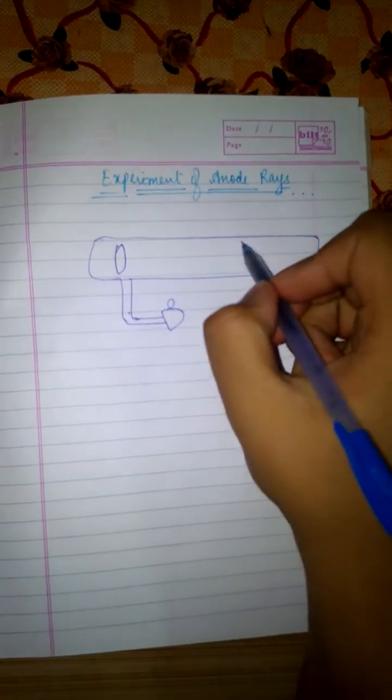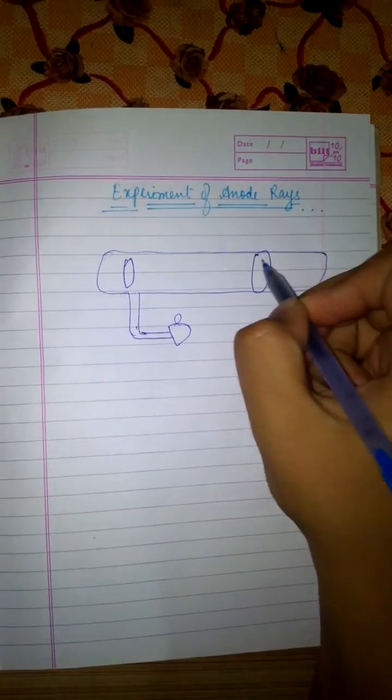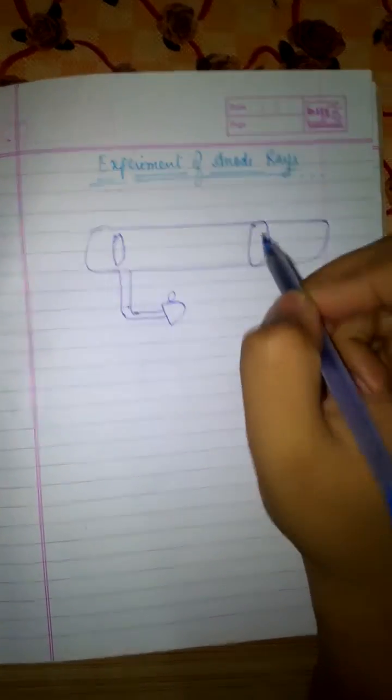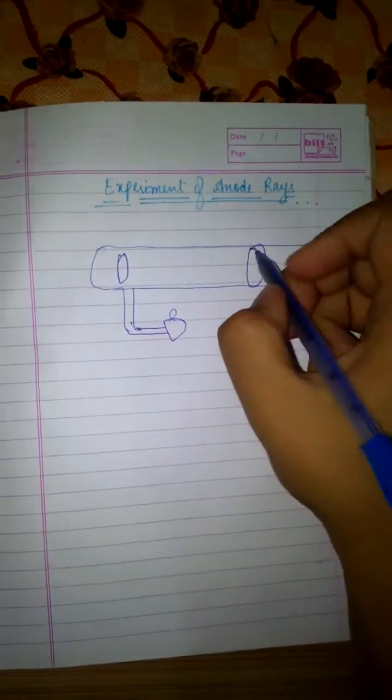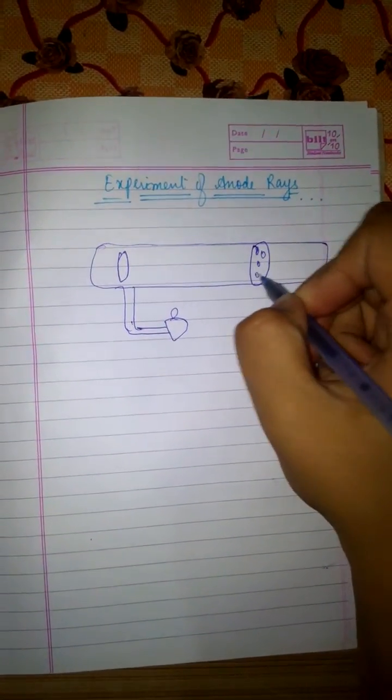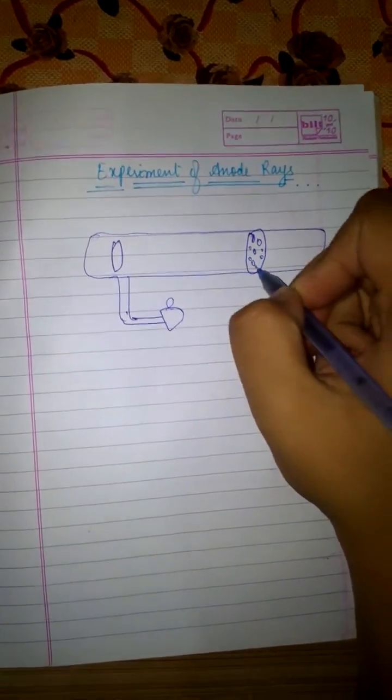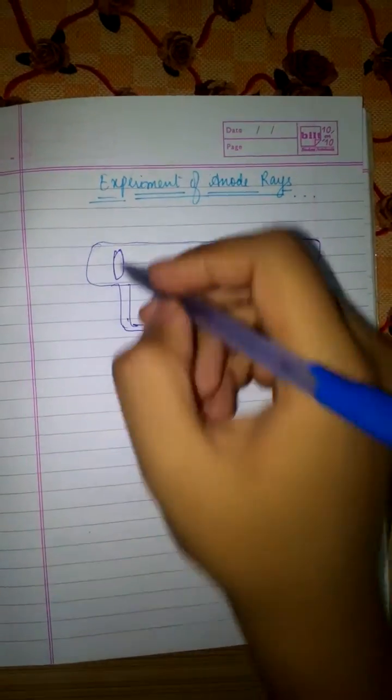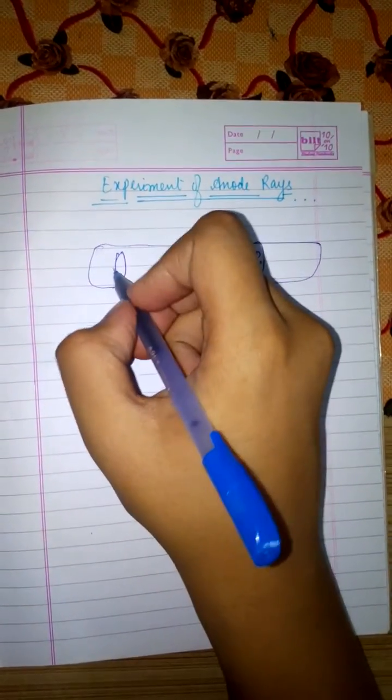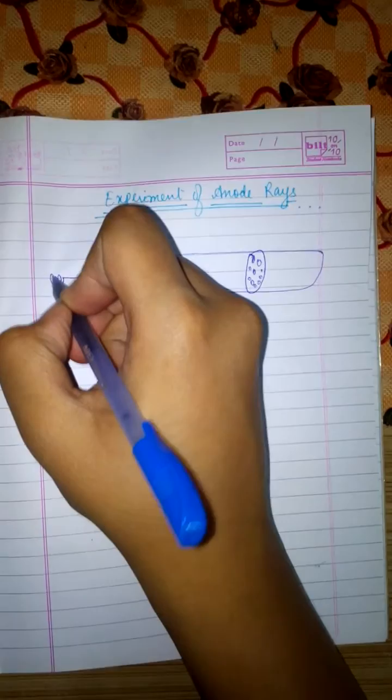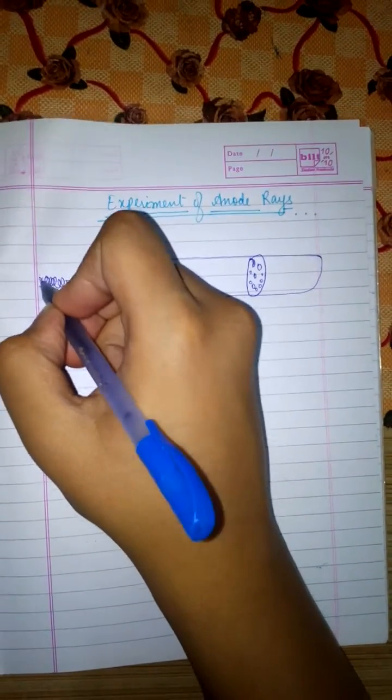And instead of a normal cathode, he used a perforated one, the cathode with holes. They both were connected to a source of very high electricity, approximately 10,000 volts.